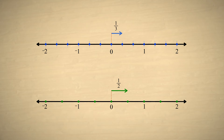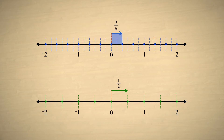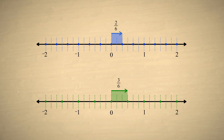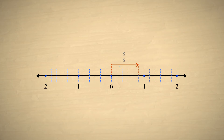For instance, in this example, we can split each division on the top number line in half. Each unit length on the top line will then be divided into six equal pieces, and the fraction one-third will be represented by two of these divisions, or two-sixths. Now if we split each unit on the bottom number line into thirds, each unit on the bottom line will also be divided into six equal pieces. The fraction one-half will be represented by three of these divisions, or three-sixths. Both fractions now represent some number of the same-sized divisions, so now we can add their numerators. And we see that these two fractions add up to five-sixths.